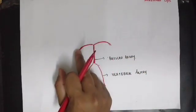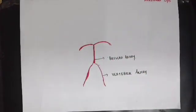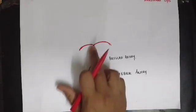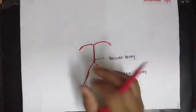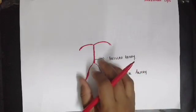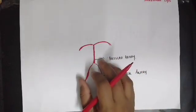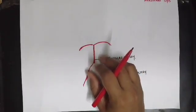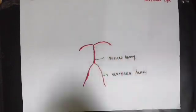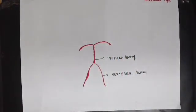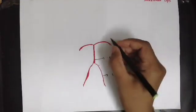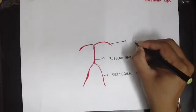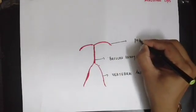Once it has reached the region of the cerebrum, it has to supply the cerebrum. As it gives out these branches at the posterior aspect of the cerebrum, these are known as the posterior cerebral arteries, supplying the posterior aspect of the cerebrum. So it gives out two branches — the two posterior cerebral arteries.